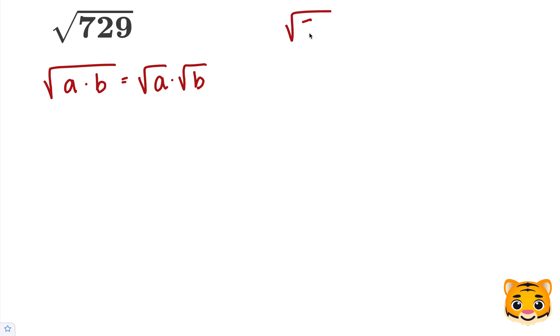Now to apply this to the square root of 729, we need to look at the factors of 729. We can use 9 and 81. Although there are other factors, I chose 9 and 81 because they're both perfect squares.